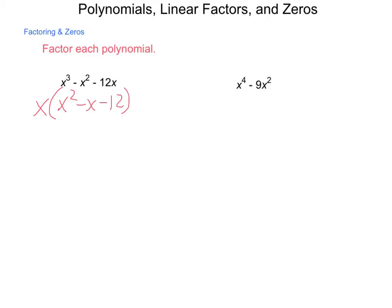There are no more greatest common factors, so now we do other things that we had factoring capabilities of from quadratics. Do you see anything, or know any numbers, that would multiply to a negative 12 and add to a negative 1? Hopefully you came up with a negative 4 and a positive 3. So this factors to x, x minus 4, x plus 3.